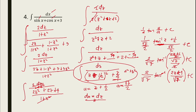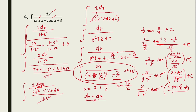Substituting back z equals tan(x/2), the final answer for number 4 is 2 over sqrt(7) times arctan of (2 tan(x/2) plus 1) over sqrt(7), plus C.